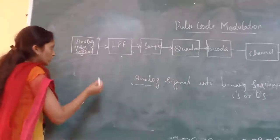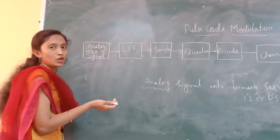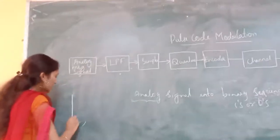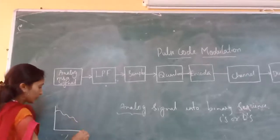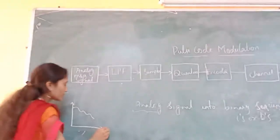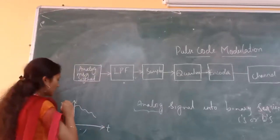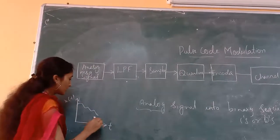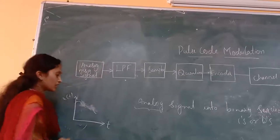If we are going for the pulse code modulation, we are giving the analog signal as an input signal. Let us suppose this is an analog input. This is an analog signal. In this analog signal, there is noise present.